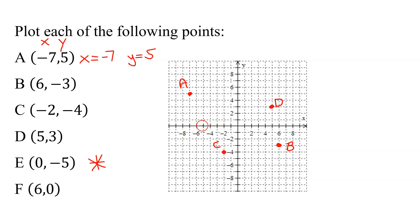If x is 0, it means go nowhere in the x direction, so I'm going to stay here on the y-axis, and then I just have to go down 5 units on the y-axis. So that is the point E, so be careful with E.